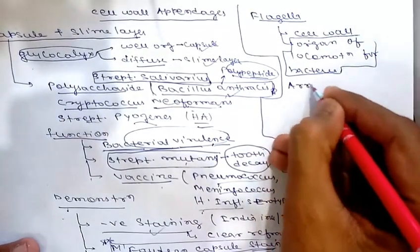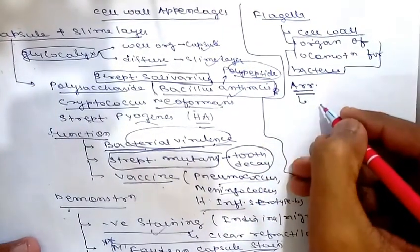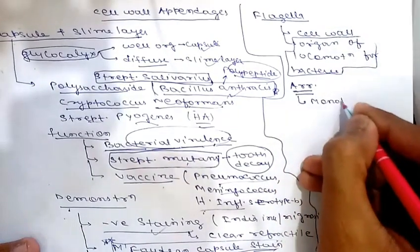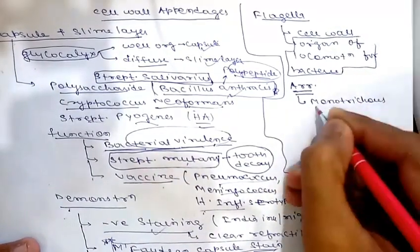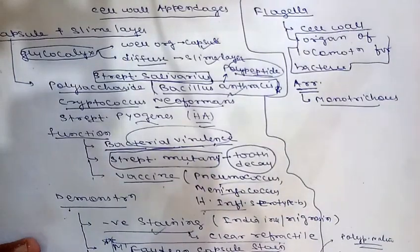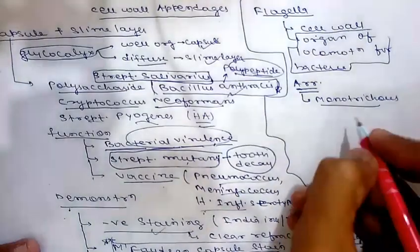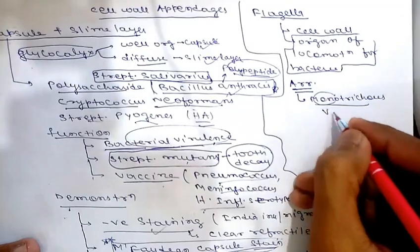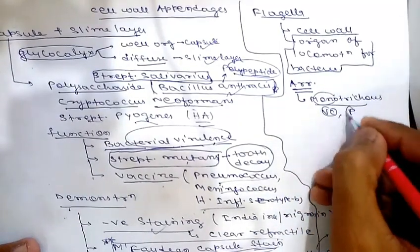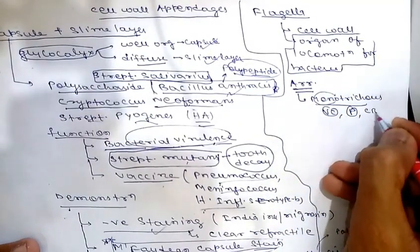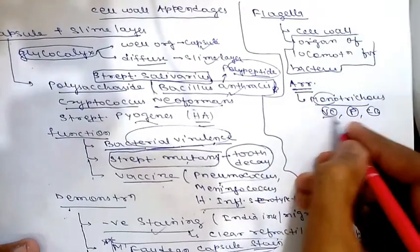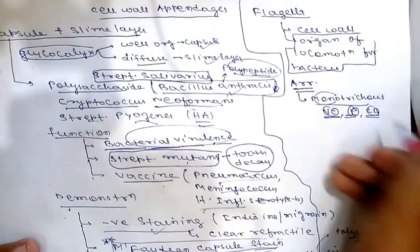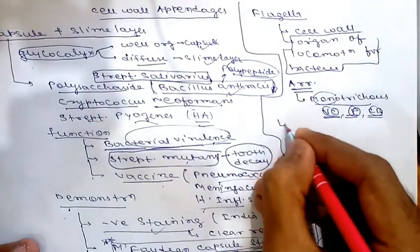There are various patterns of flagellar arrangement. The first is monotrichous — the presence of only one flagellum. Examples include Vibrio cholerae, Pseudomonas, and Campylobacter.